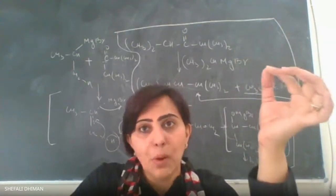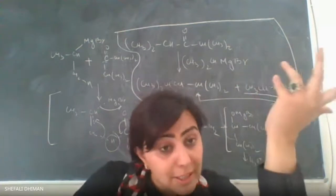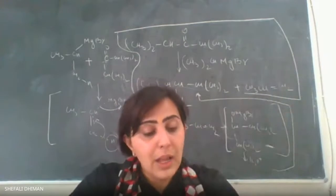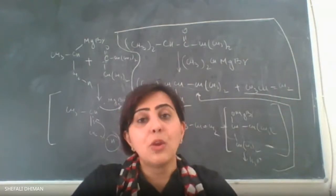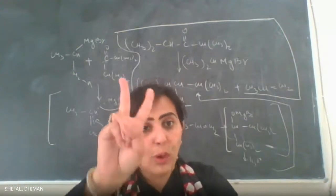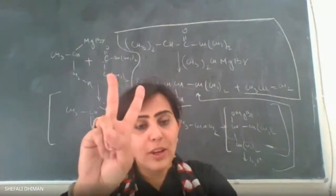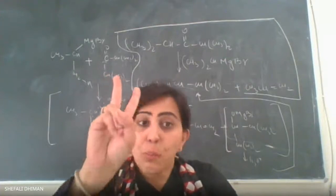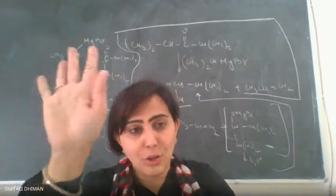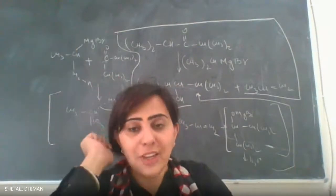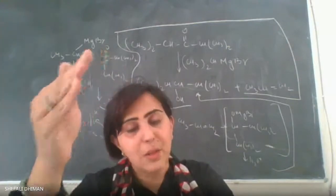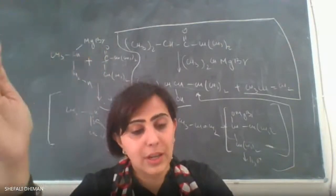The overall addition may take place at the carbon-oxygen double bond, which is called 1,2-addition, or at the carbon-carbon double bond, which is called 1,4-addition. Why do both types occur? Because there are two double bonds, and the Grignard reagent can potentially undergo both types of addition.